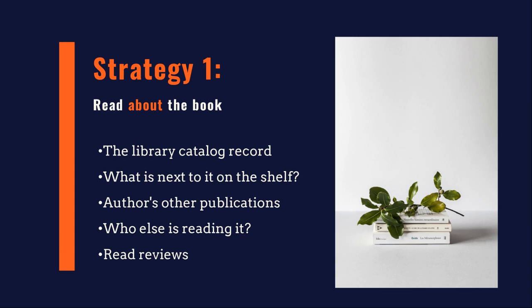Pretty simply, you can read about the book. You can assess the book's relevance and value very quickly by looking up the book in the library catalog, doing a little bit of reading about the book in the catalog itself. Ask yourself: what is next to this item on the shelf? What else has the author published on this topic? Who might be reading this book — in other words, who is citing it? And then finally, you can read reviews of books to really get a handle on what a book might be about.